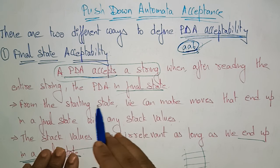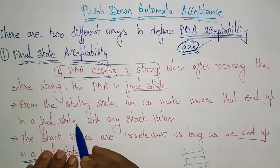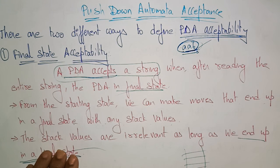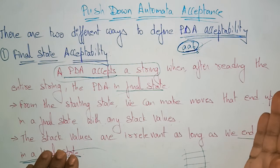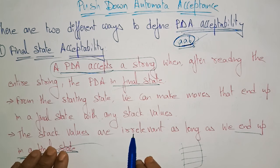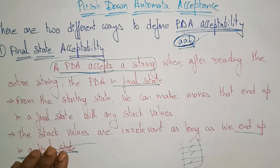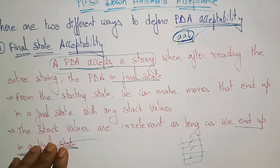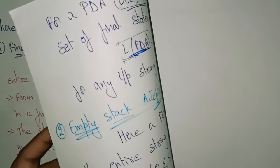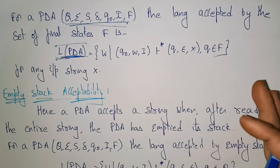From the starting state, we can make moves that end up in a final state with any stack value. The stack values may be anything — they are irrelevant. The key point is that we have to finally reach the final state. As long as we end up in a final state, the string is accepted.